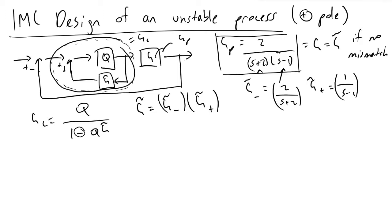The next step in the IMC design method is defining the term Q. Q is defined to be some filter F times (G̃⁻)⁻¹. We know what (G̃⁻)⁻¹ is — the question now is what are we going to let F be?